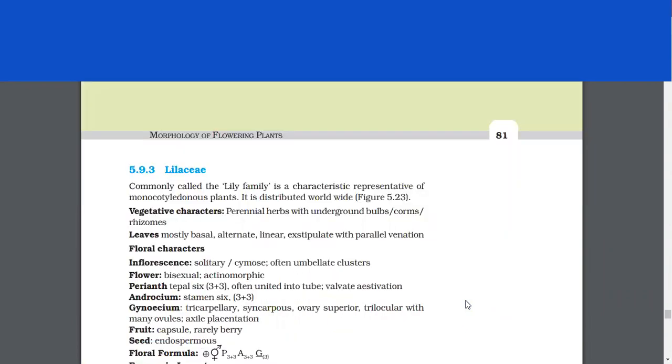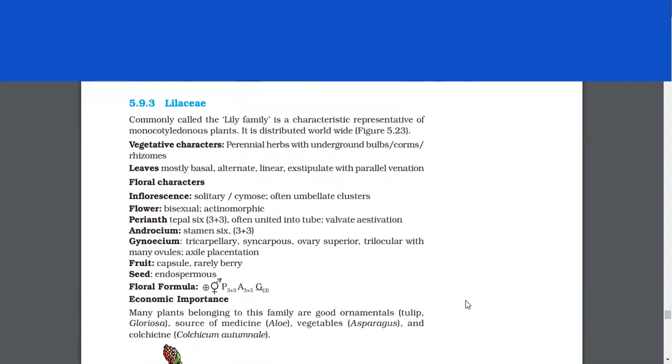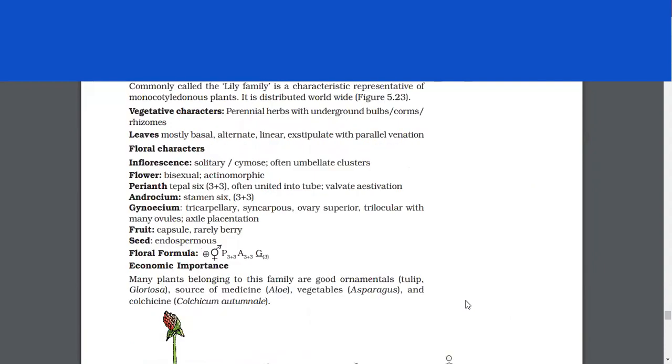Liliaceae. Commonly called the lily family is a characteristic representative of monocotyledonous plants. It is distributed worldwide. Vegetative characters. Perennial herbs with underground bulbs, corms, rhizomes. Leaves mostly basal, alternate, linear, exstipulate with parallel venation.